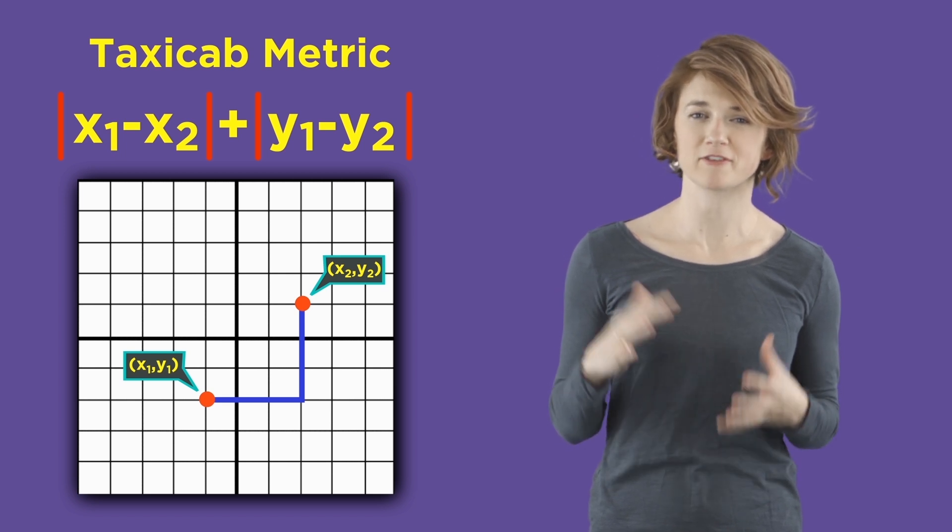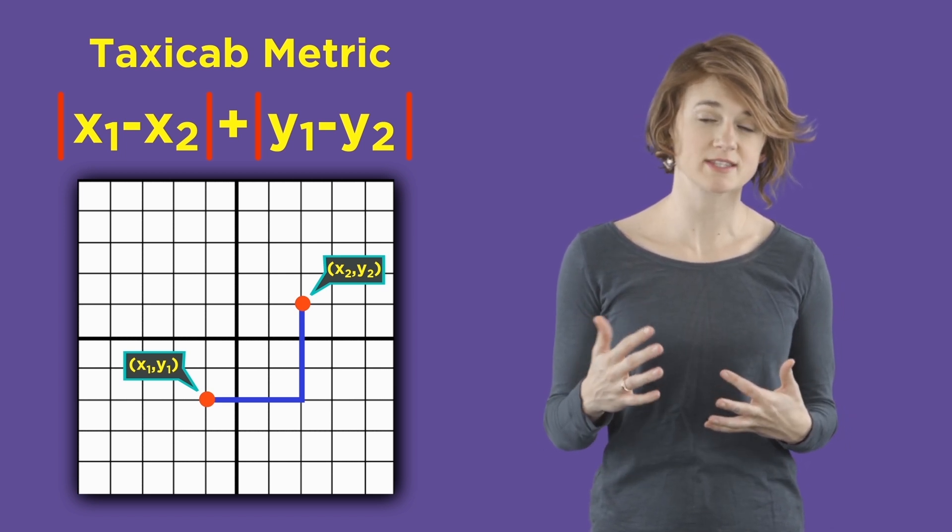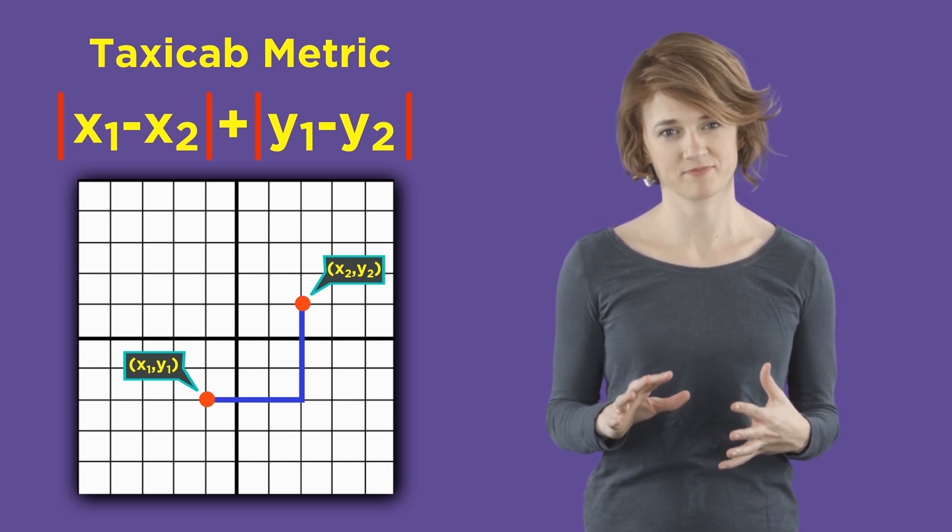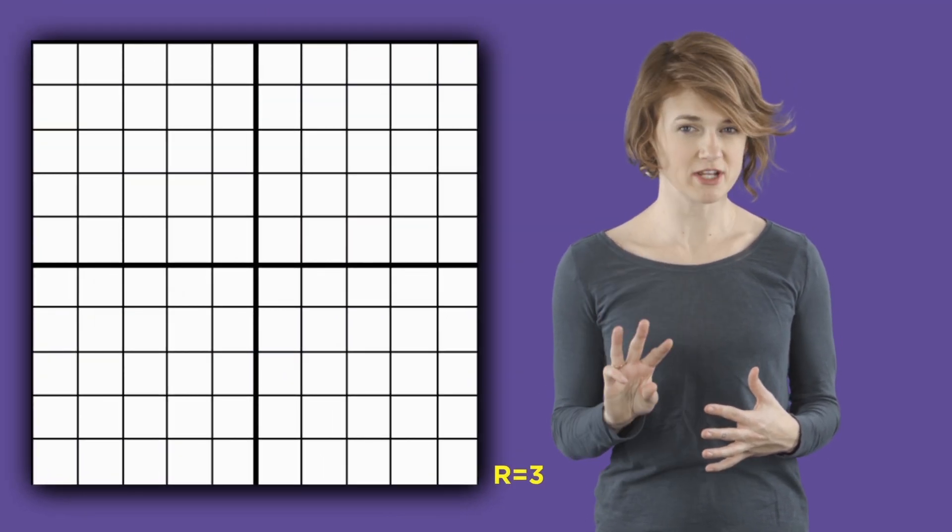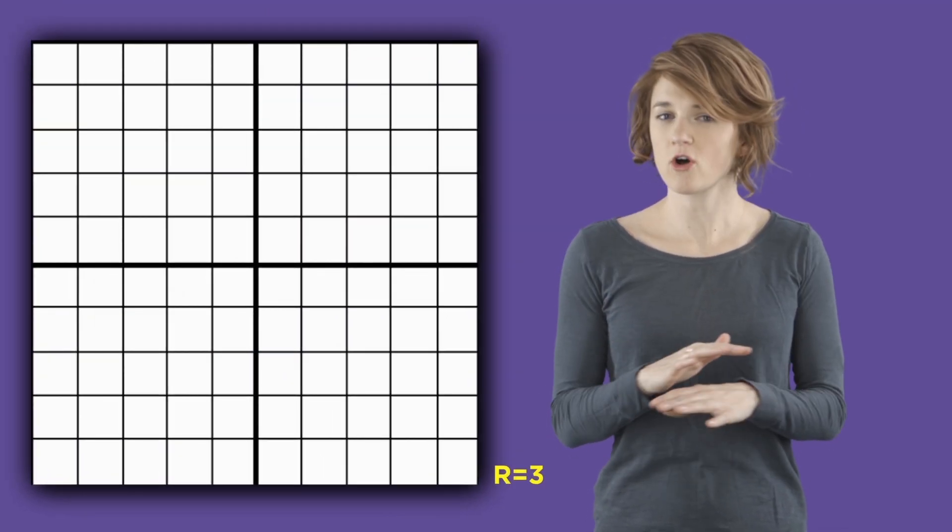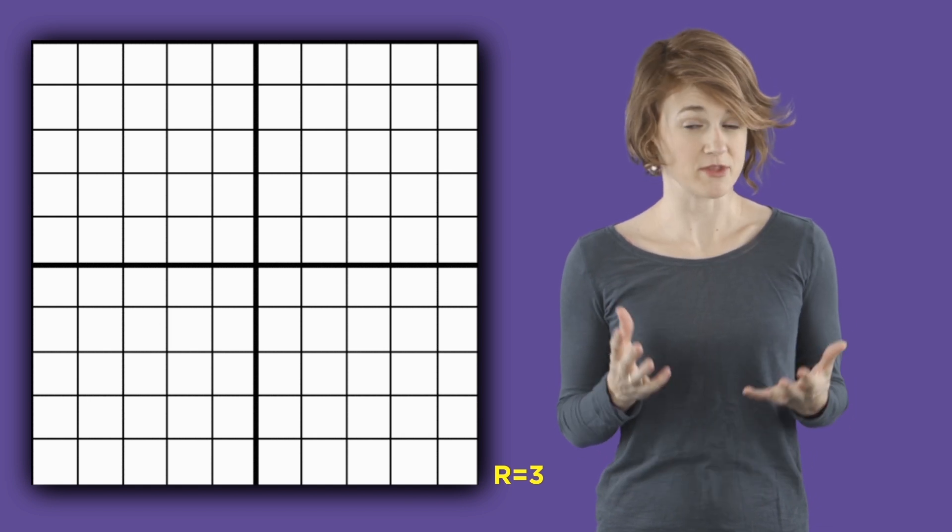Here's the general formula for the distance between two points using the taxicab metric. So now let's try drawing a circle of radius 3 in this metric. That's all the points that are distance 3 from the origin.